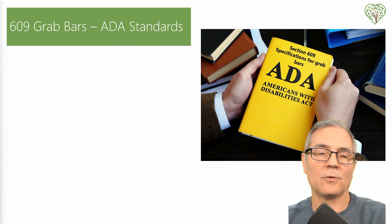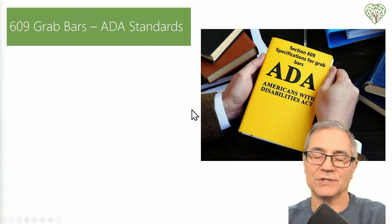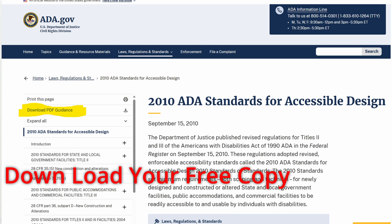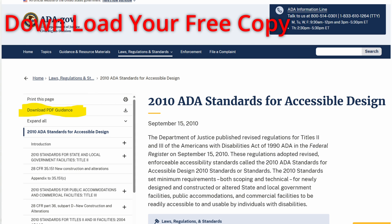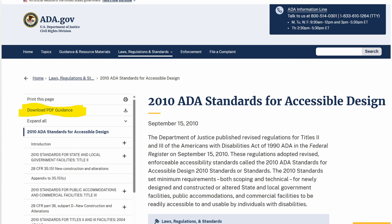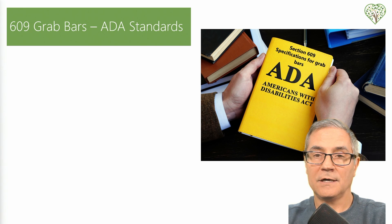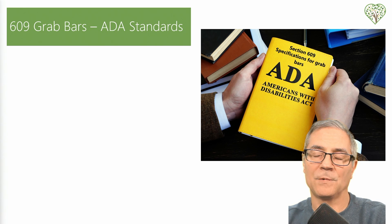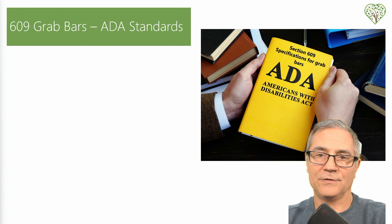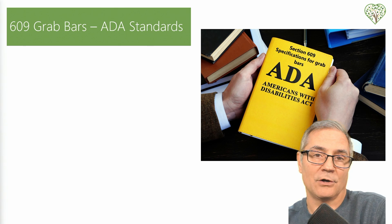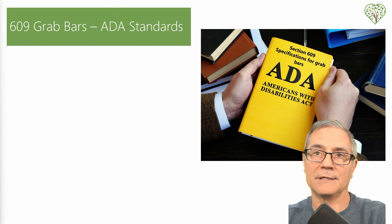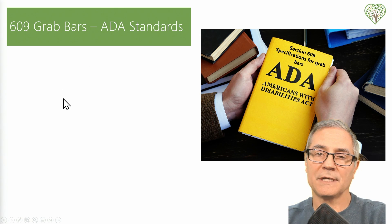One of the things I want to talk about is the ADA Standards for Accessible Design. These standards were specifically focused on ensuring that buildings and facilities are accessible for people with disabilities. They do not cover residential, but they are a great guide if you're doing any home modifications or trying to understand what they felt were best for people in public environments. It's a great guideline to go by.